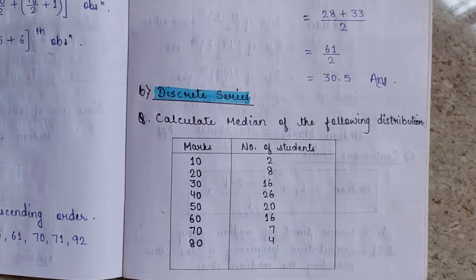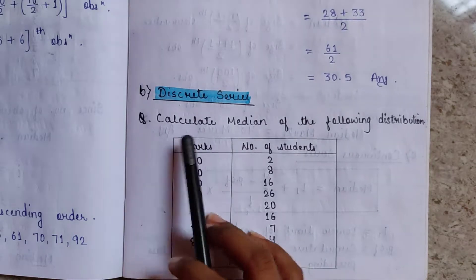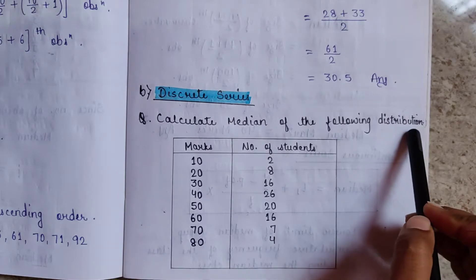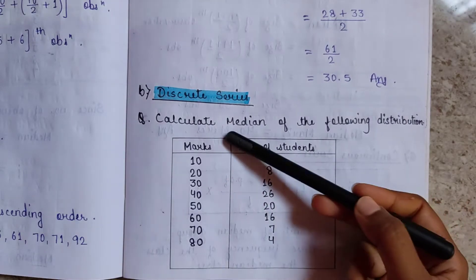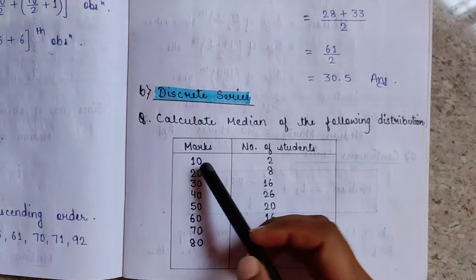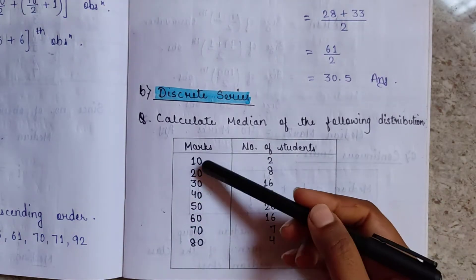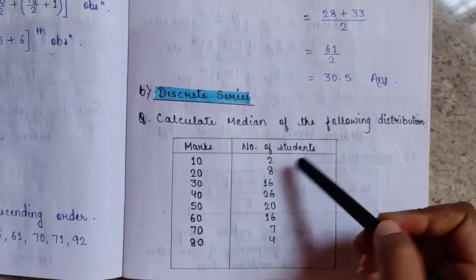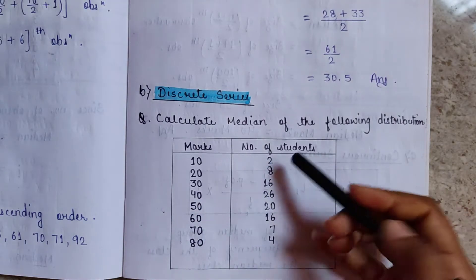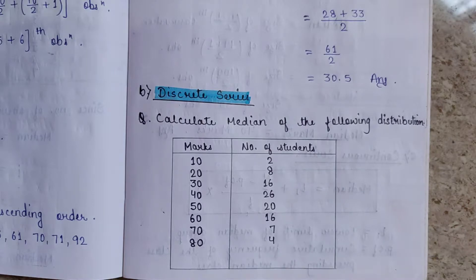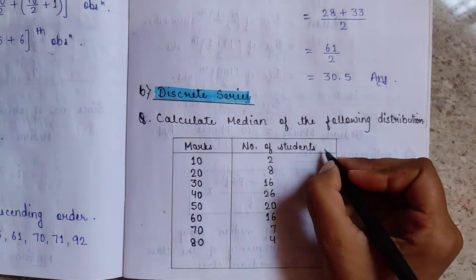For the discrete series, the question is to calculate the median of the following distribution. Marks are 10, 20, 30, 40, 50, 60, 70, 80 and the number of students is 2, 8 — this number of students is the frequency we have given.